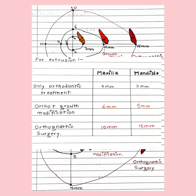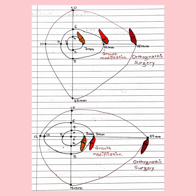It is not about the precise dimensions or measurements but about the concept. You need to understand the concept. These envelopes are not symmetrical — the envelope of discrepancy tells us there is more potential for retraction than protraction, more potential for extrusion than intrusion, and more potential to set back than to advance the maxilla or mandible.